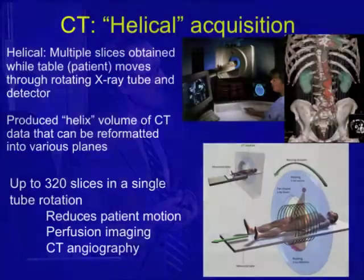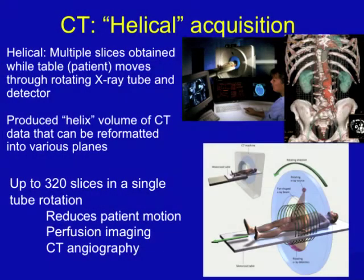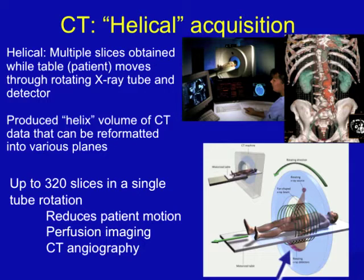CT scanning involves x-rays. It's a long table in a tube. The tube is an x-ray source and a detector that circles the patient's body quickly as the patient goes through on a table, creating a helix of data that can be done very quickly and reformatted in different planes.